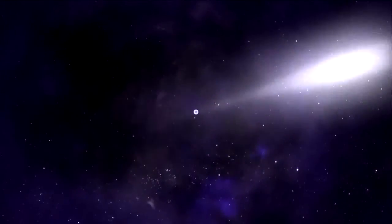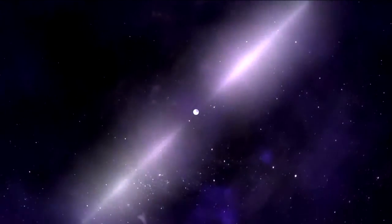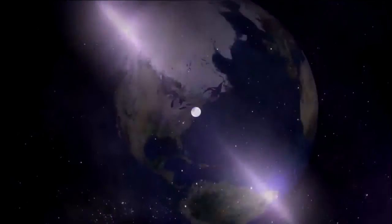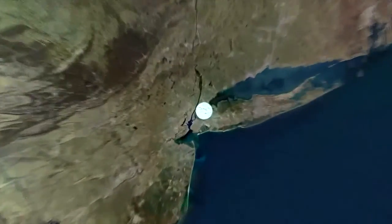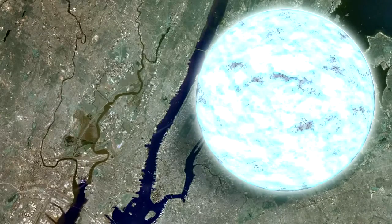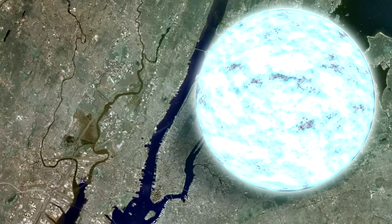A pulsar is a rapidly spinning neutron star, which is the small, incredibly dense remnant of a much more massive star. A teaspoon of matter from a neutron star weighs as much as Mount Everest, and a neutron star is so compact that a ball about 15 miles across contains more matter than our sun.